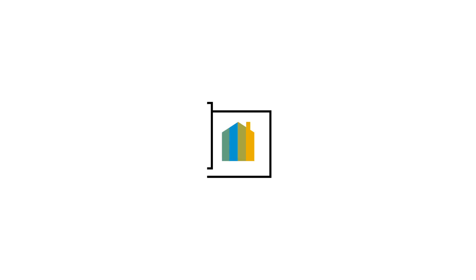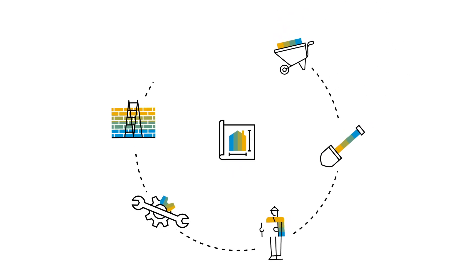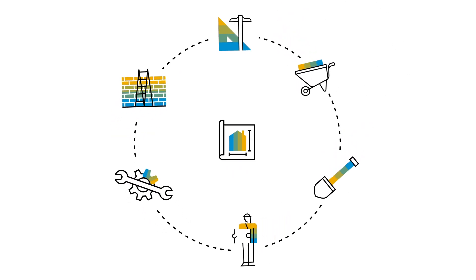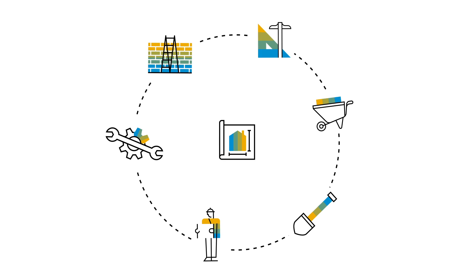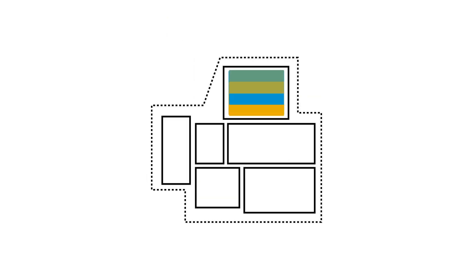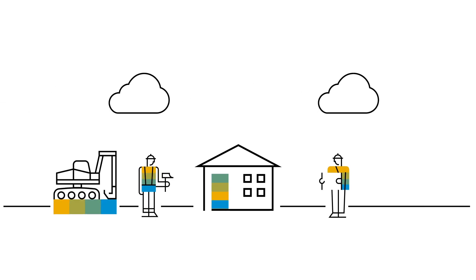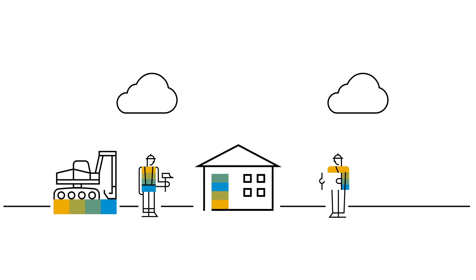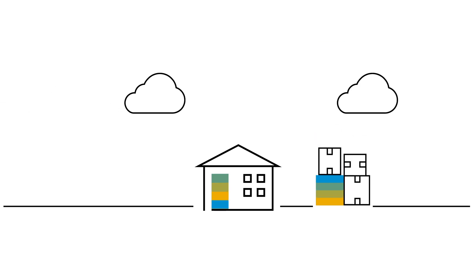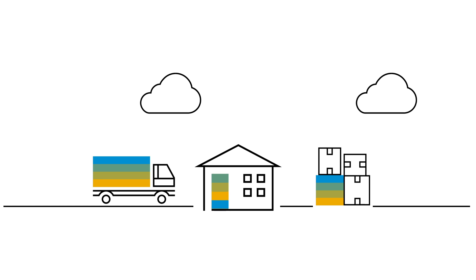If you were going to build or remodel a house, you'd want an architectural plan before you got started. A plan that took into account everything you needed, something that ensured all the rooms were connected to each other and a unified infrastructure. You'd want the plan to highlight the impact of any changes, and you'd want a transition plan so you could move in without any issues.